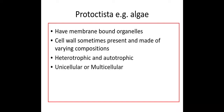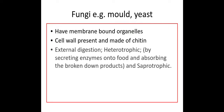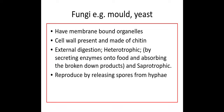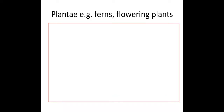Fungi have membrane-bound organelles and are eukaryotes. They have a cell wall made of chitin, and they feed by heterotrophic and saprotrophic means. Fungi reproduce by releasing spores from hyphae — the spores land on a substrate and grow, producing fruiting bodies. They are also multi-nucleate and can be multicellular or unicellular.